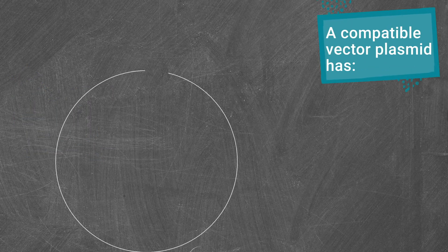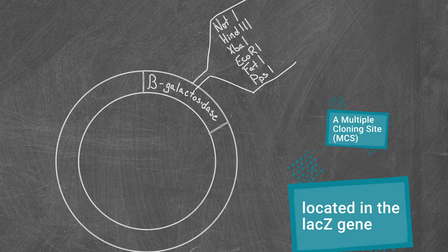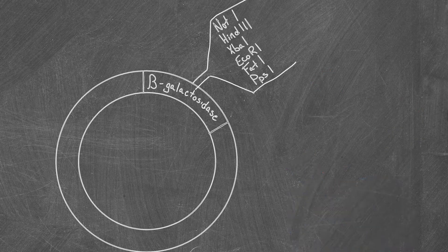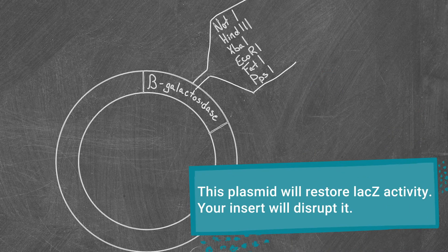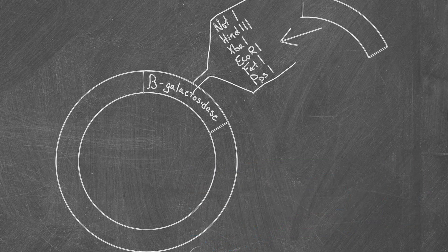You'll also need a compatible plasmid, which contains a multiple cloning region within the coding sequence of the piece of lacZ that was deleted from the competent cells. This plasmid alone will restore lacZ activity, but successful ligation of your insert will disrupt the lacZ coding sequence, so the activity is not restored.